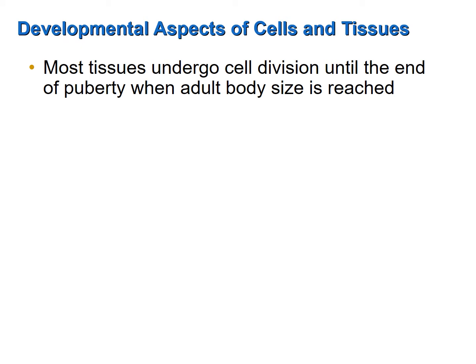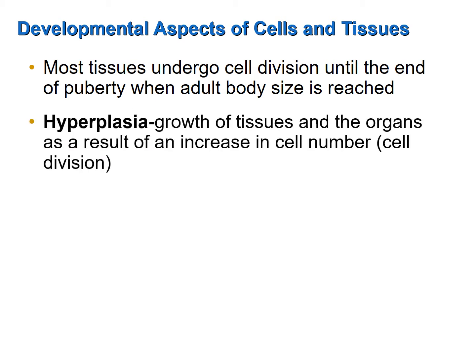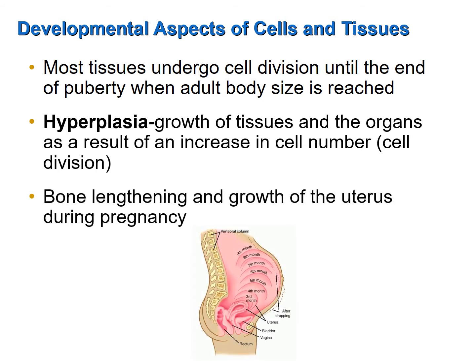Most tissues of the body undergo cell division at least until the end of puberty, once adult body size is reached. Structures of the body — tissues and organs — increase in size as a result of hyperplasia, that is, an increase in cell numbers. The lengthening of bones as well as the growth in the size of the uterus during pregnancy is due to an increase in cell number, or hyperplasia.